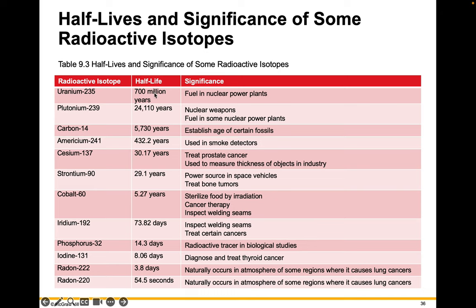Isotopes are sorted by half-life here. Uranium-235 has a very long half-life. But some, like radon-220, take less than a minute for half of radon-220 to decompose into some other isotope.